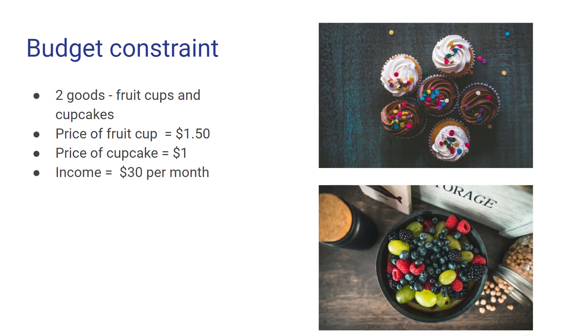We're going to take a simple example where parents provide an elementary school student with some money that can be used to only buy two things: fruit cups or cupcakes. A fruit cup costs $1.50, a cupcake costs $1, and the parents provide this child with $30 a month. We're going to look at what combination of goods can be purchased over the course of this month given this income and given these prices. That's the type of thing that a budget constraint captures.